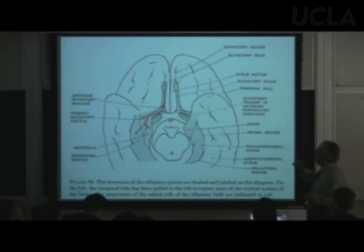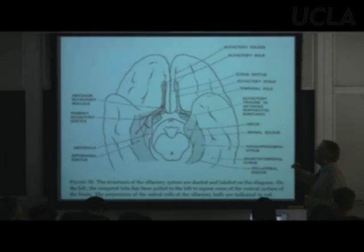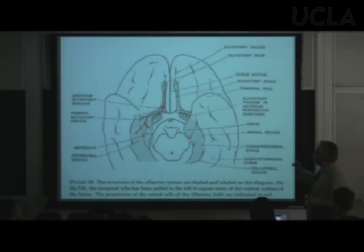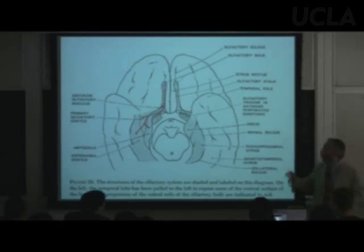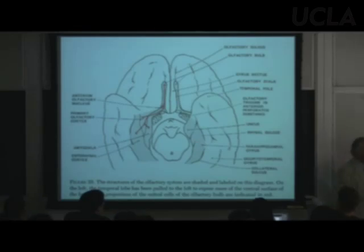Axons from the olfactory bulb synapse in the primary olfactory cortex — part of the piriform lobe. They synapse on the uncus, and inside the uncus is a structure called the amygdala. Axons also project to the entorhinal cortex and other parts of the piriform cortex. More stories about those next week.